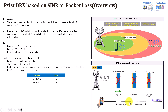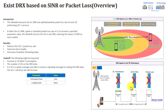When DRX is disabled, the eNodeB gains the capability to transmit data to the user at any time — meaning every 20 ms. This provides many more opportunities to retransmit packets. Where previously only two or three retransmission attempts could occur within 40 ms, now the eNodeB can make five or more retransmission attempts, transmitting every 20 ms instead of every 40 ms.